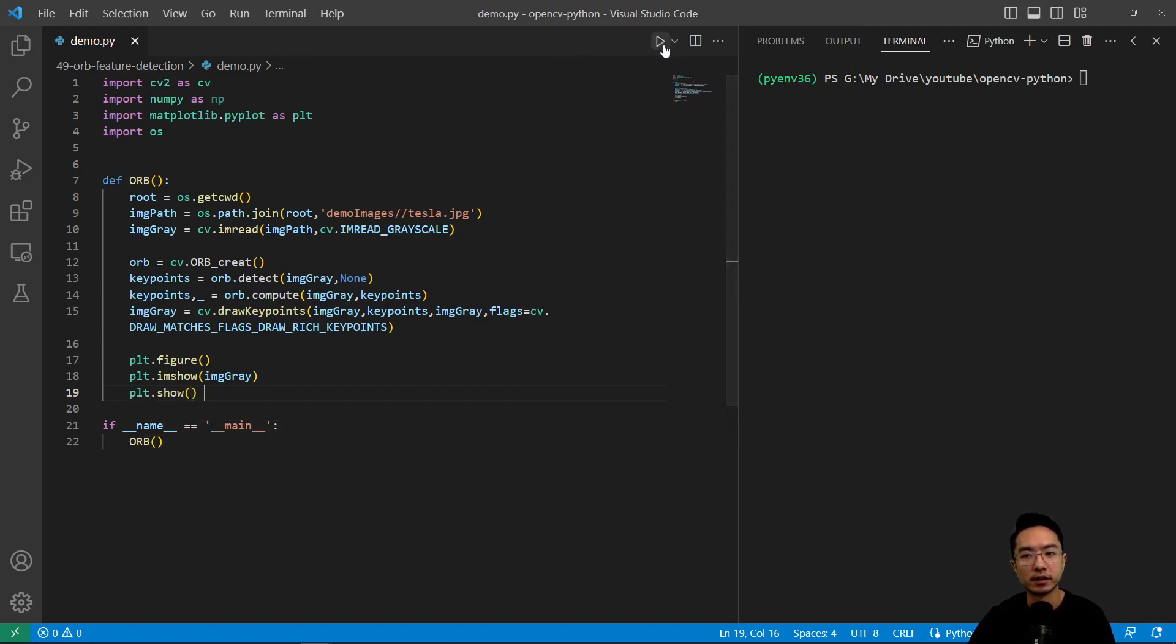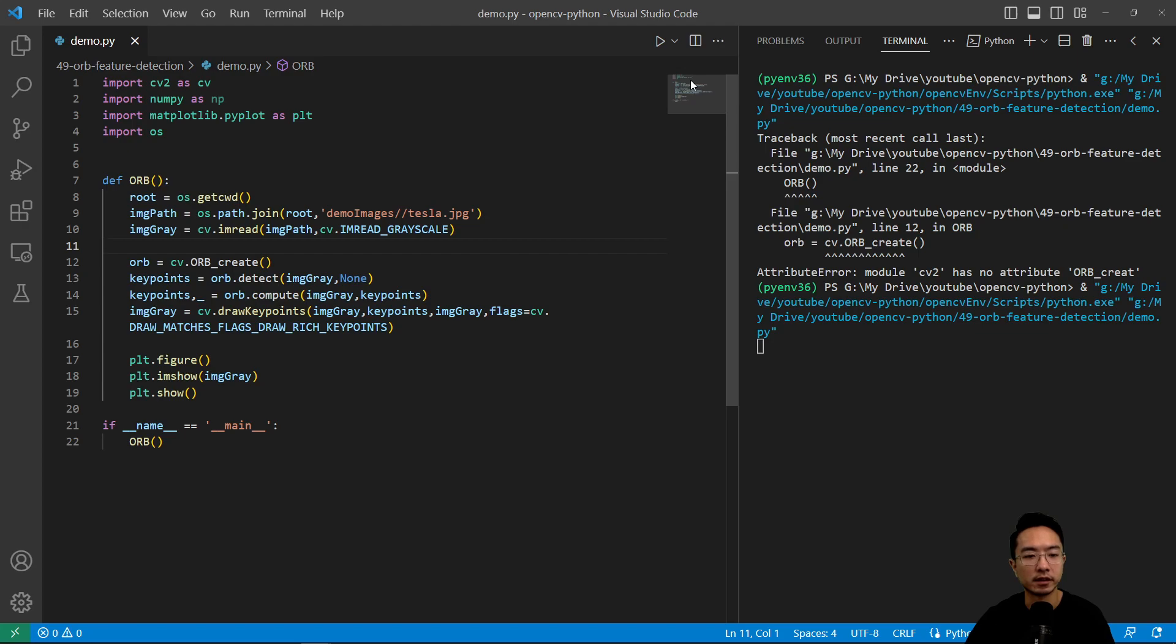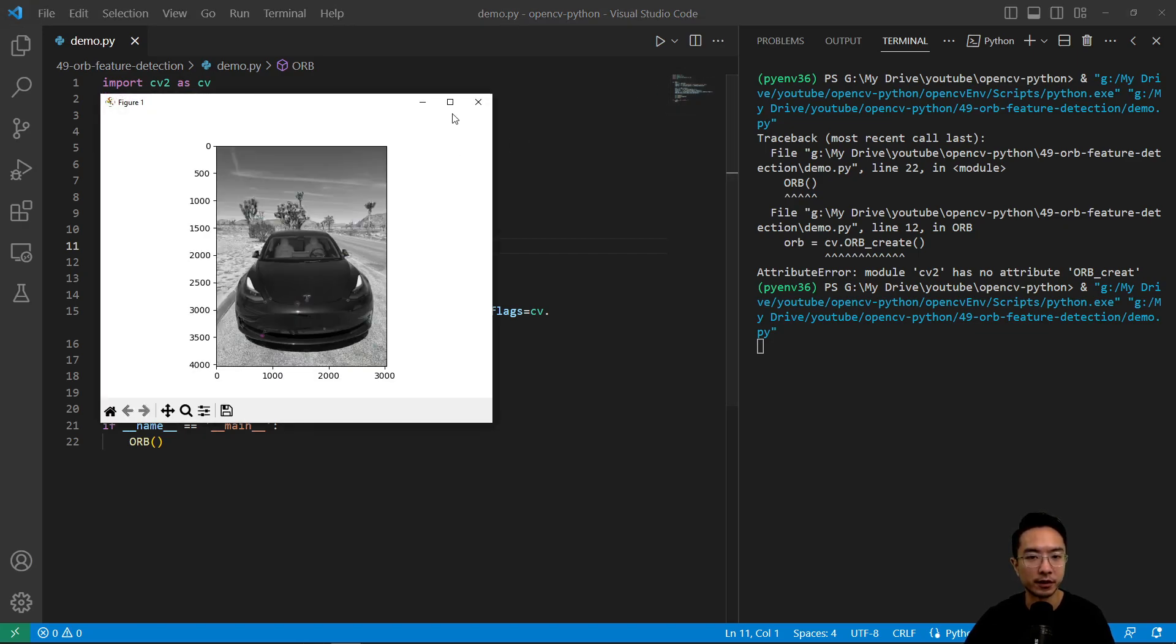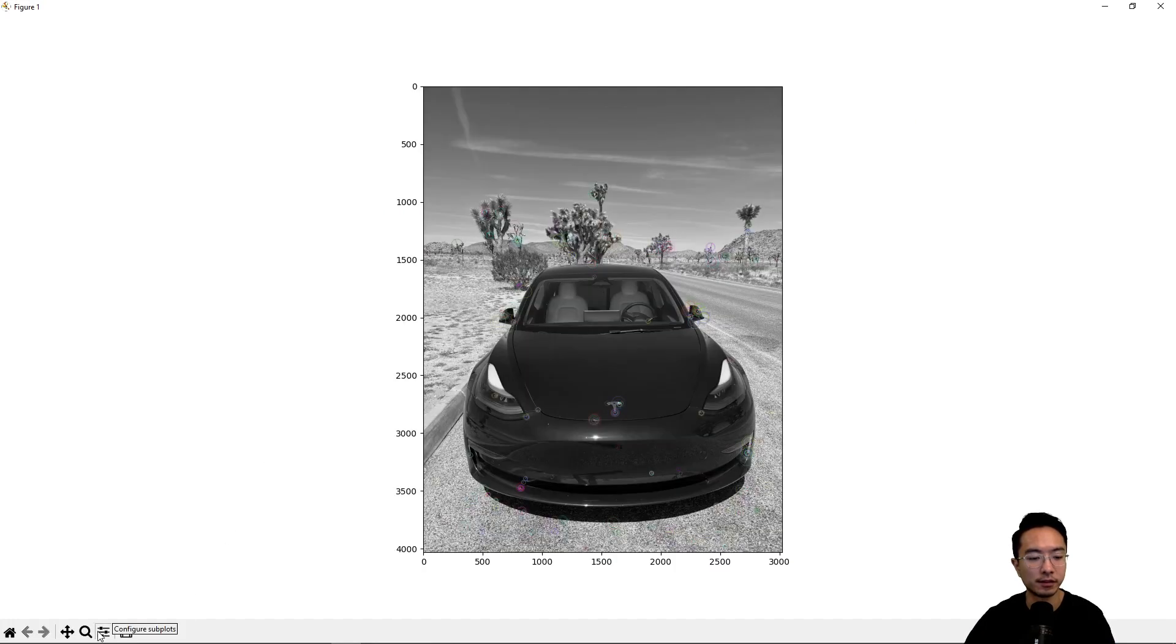So if I go ahead and run this, we should see our features. I'm missing an e here. So if I run this again, we should see our features being shown, and you can see it's very fast, because we're using the FAST method.